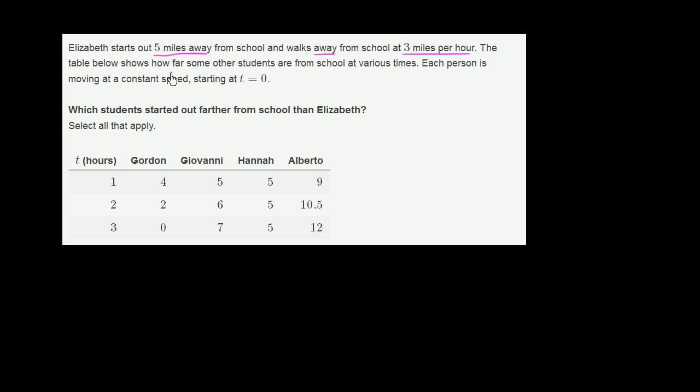The table below shows how far some other students are from school at various times. Each person is moving at a constant speed, starting at time equals 0. Which students started out farther from school than Elizabeth? Select all that apply.